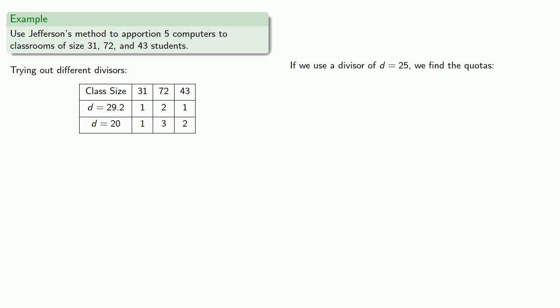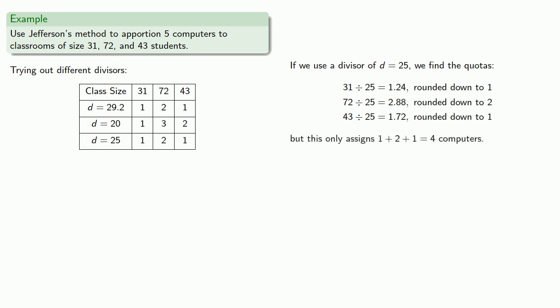If we use a divisor of 25, we find our quotas by dividing the class sizes by 25 and rounding down. This would have us assigning one plus two plus one, four computers, which means that we have one more computer left to assign. So our divisor is now too big, so we'll choose another.